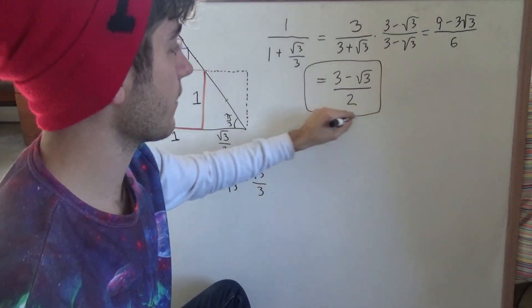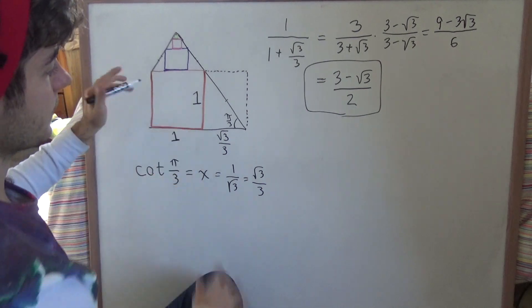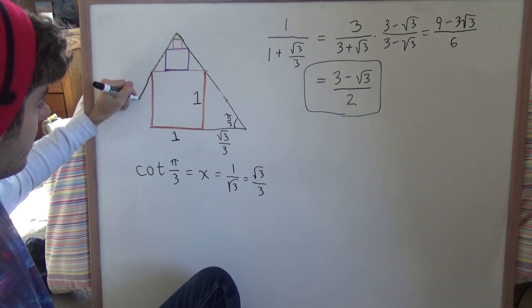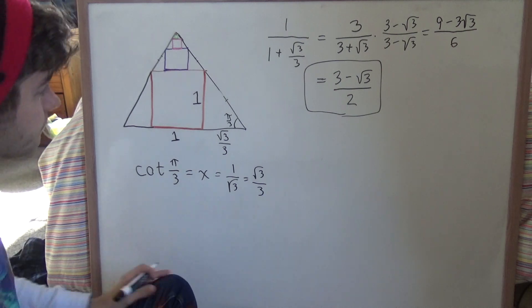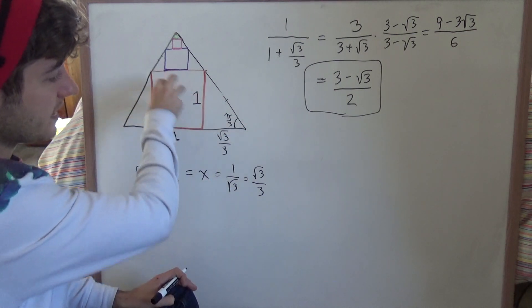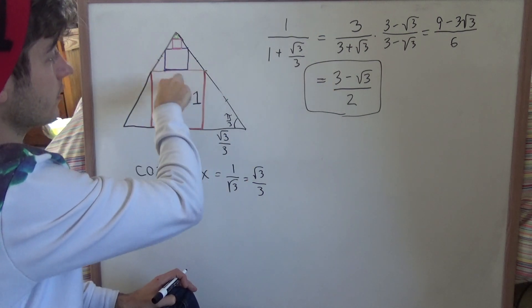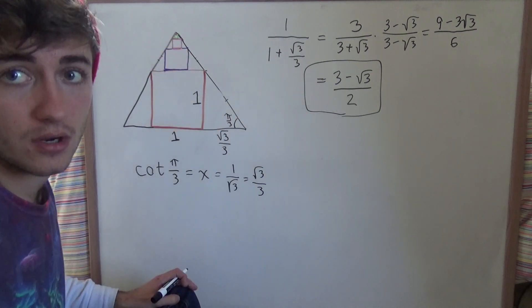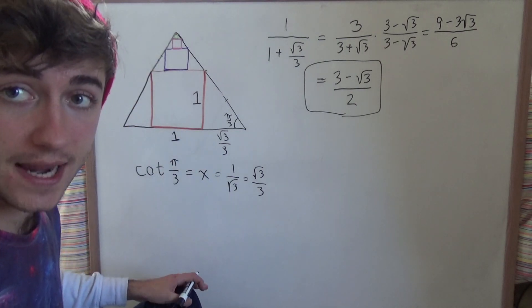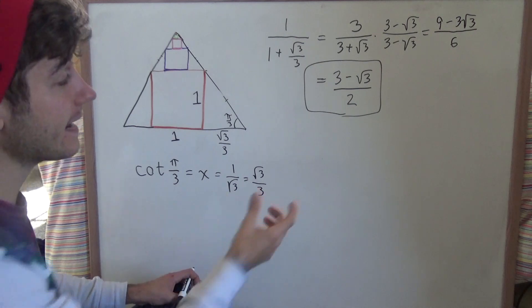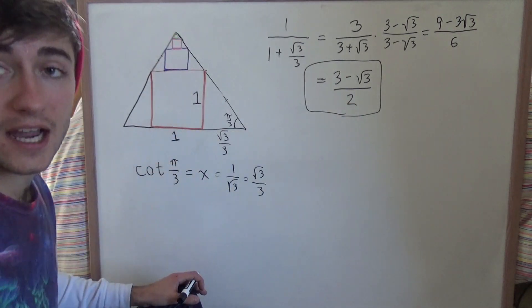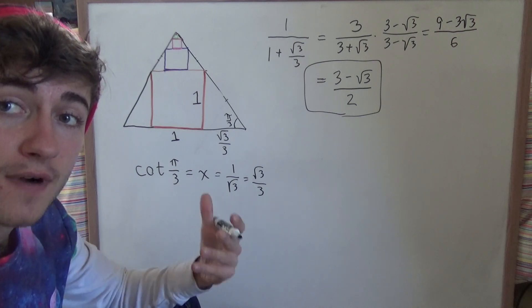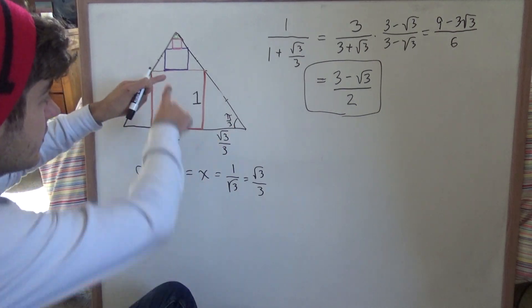So this is the fraction of the rectangle taken up by this square. Now let's put this part of the equilateral triangle back. The fraction of that trapezoid that is the square is this number, and also the fraction of the smaller trapezoid that is the square is also this number. The scale factor for each square in each trapezoid is the same. Because it's all the same, I can take this number and multiply it by the area of the entire equilateral triangle to find the total area of all the squares.